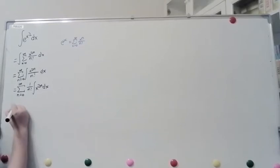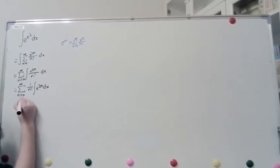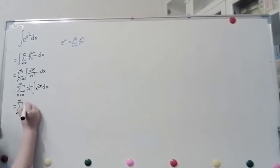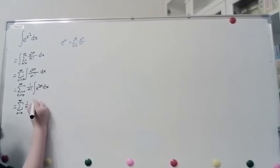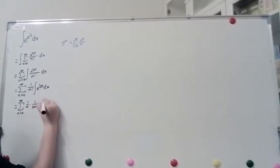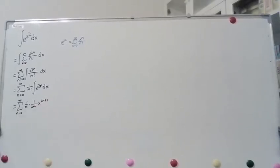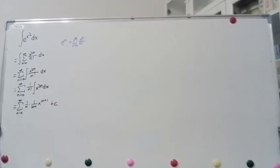So, we get this as the sum n equals 0 to infinity, and then this is 1 over n factorial, but you multiply by the integral of this, which is 1 over 2n plus 1, x to the 2n plus 1, and then now we can simplify this.